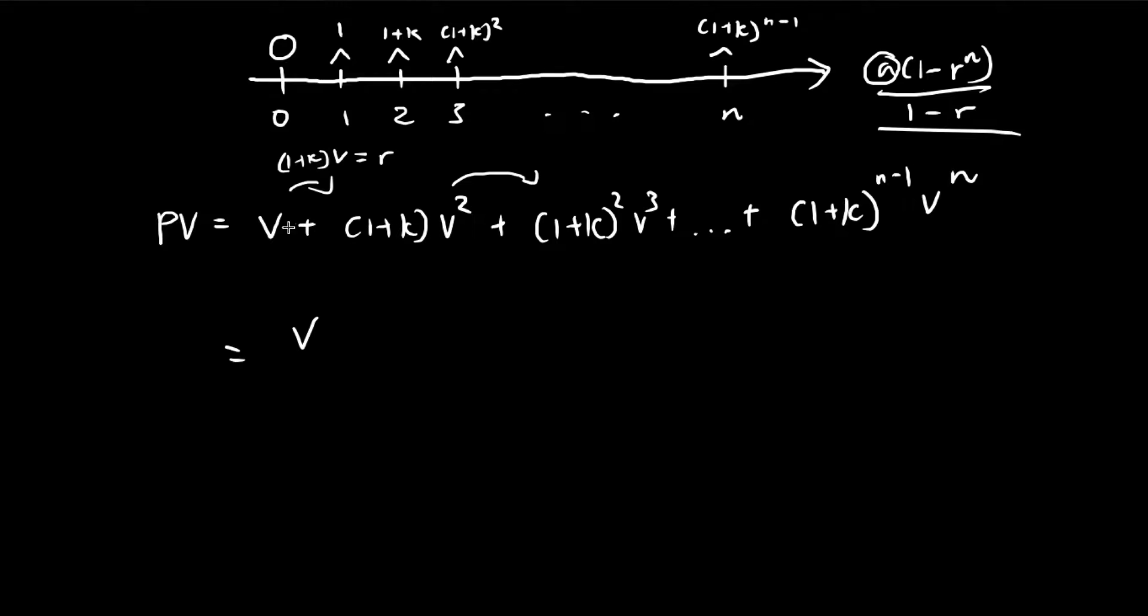All we have to do is substitute everything into this geometric series formula. So a, the first term, is just v, and then 1 minus the common ratio. We're almost done, so let's just rearrange this expression a bit.